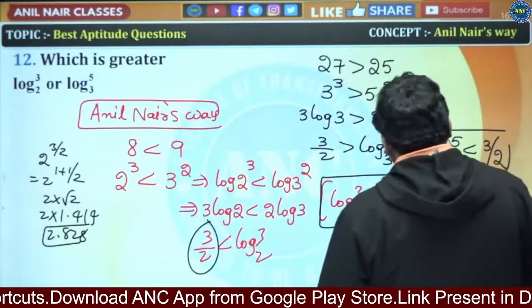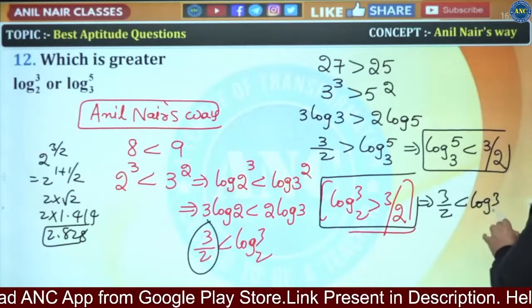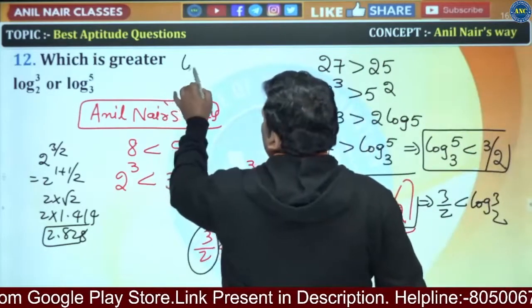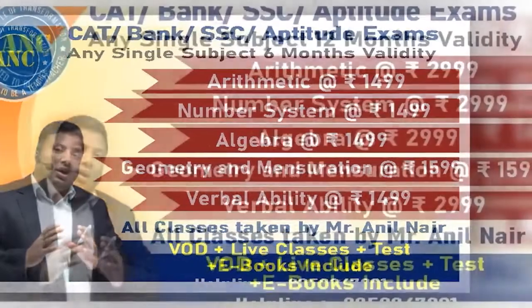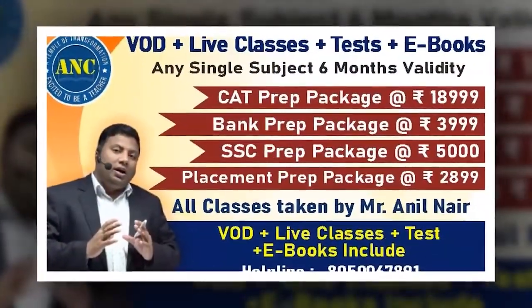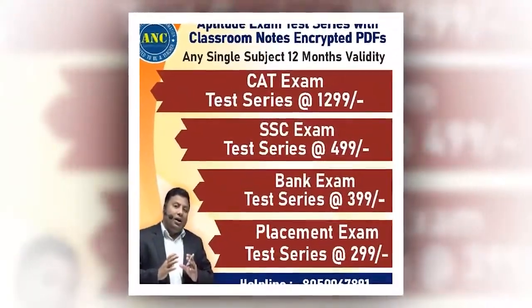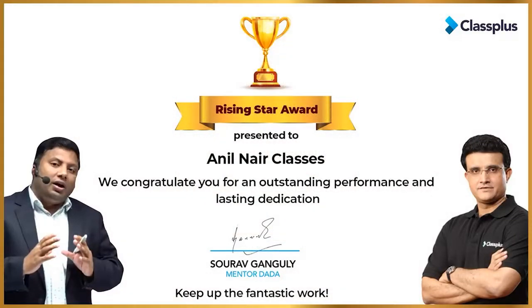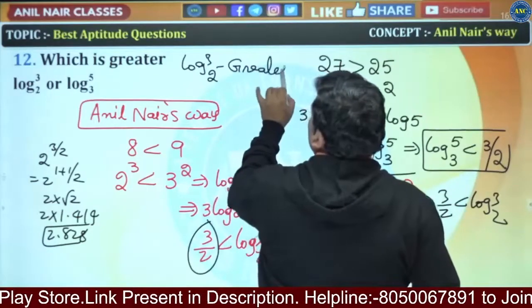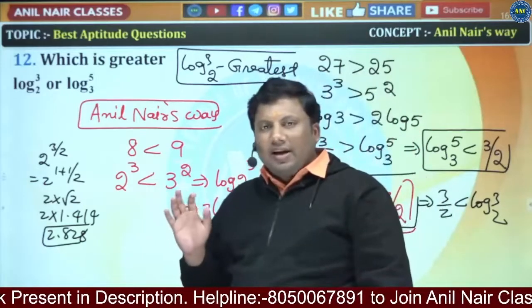So the inequality is: 3 by 2 is less than log 3 base 2, and log 5 base 3 is less than log 3 base 2. Log 3 base 2 is the greatest. I hope you understood the idea of how I am solving this.